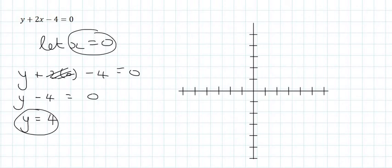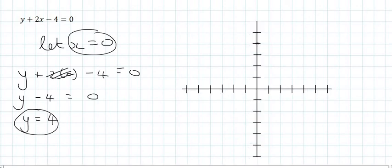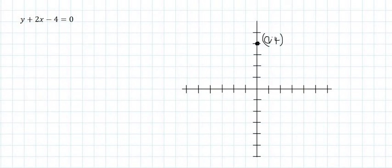So when x is 0, y is 4. So you go to that point on the diagram. When x is 0, y is 4, and that would be over here. So we can put the coordinates 0 and 4.